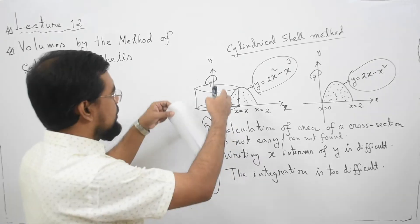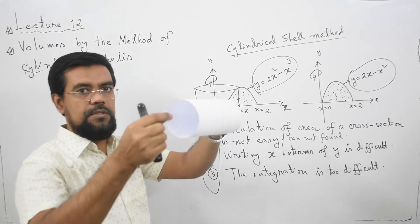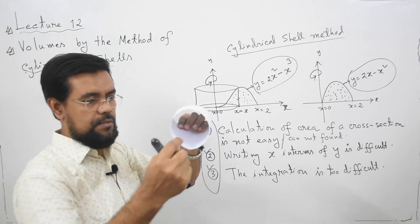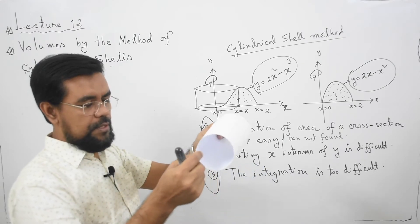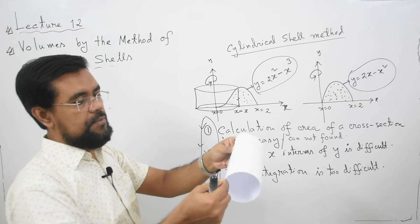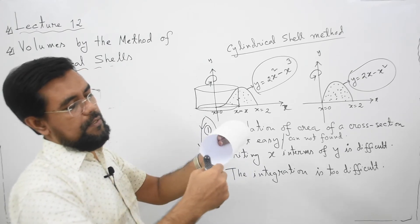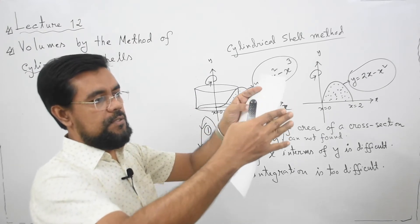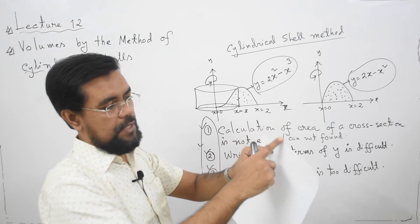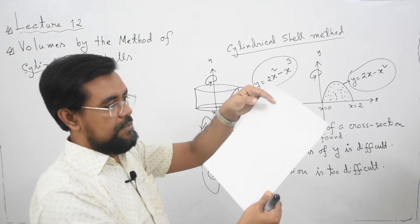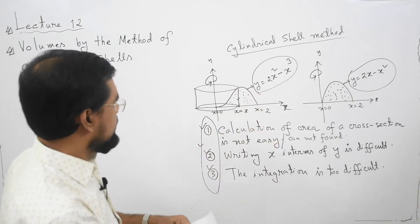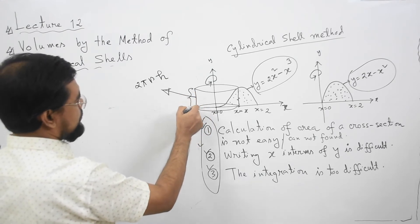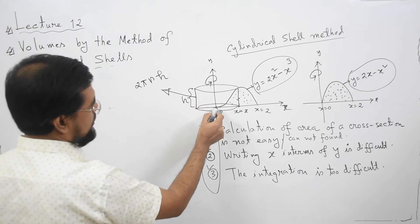At x = x, this cylindrical shell looks like this. We can consider it as a cross-section and easily calculate its area. You just need to consider the circumference and multiply it by the height. If you unroll the cylinder, it looks like a rectangle where the length is the circumference and the width is the height. So the area of this shell will be 2πrh, where h is the height of the shell and r is the radius of the shell.